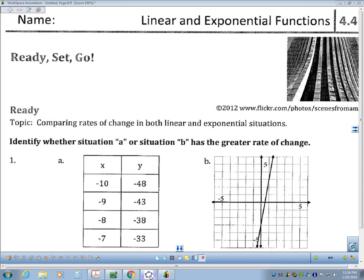Here's the graph of situation A. I'm taking negative 10, negative 48, and all the other table values, and writing them as ordered pairs and graphing them.